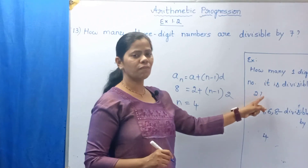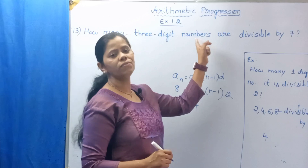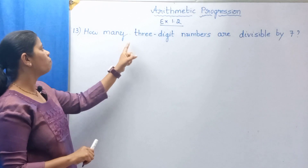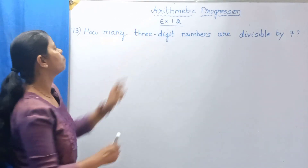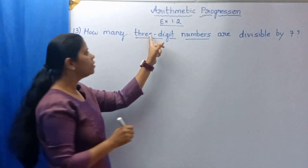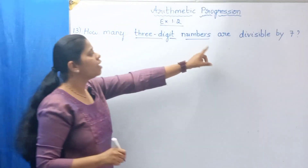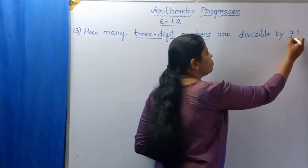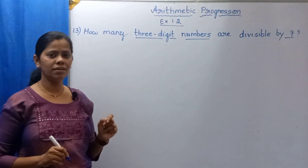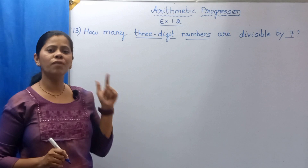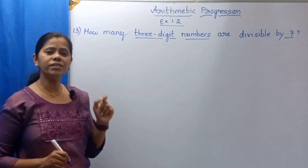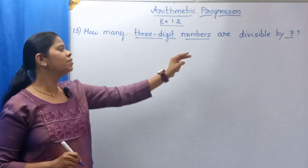We have solved that example. In the same way, we have to solve the main question. Now read the question properly: how many 3-digit numbers are divisible by 7? A 3-digit number starts from 100. So which is the first 3-digit number divisible by 7? You have to find that out.